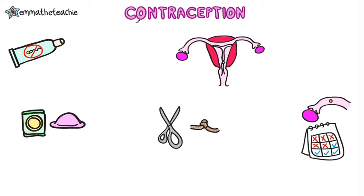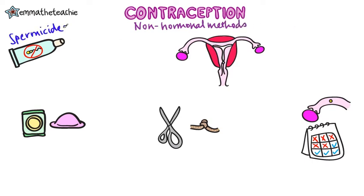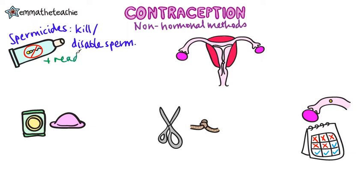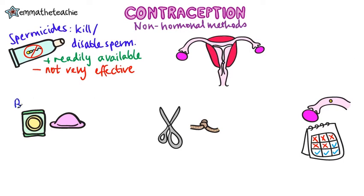Now we're going to look at the non-hormonal methods of contraception. First up, we've got spermicides. This is a chemical method that can kill or stop sperm from actually working. The benefit is that they're readily available — you can buy them from any pharmacy — but the disadvantage is they're not very effective and shouldn't be used on their own.